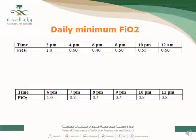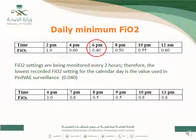Here is an example of daily minimum FiO2 detection. In the first example with every two-hour readings, you take the lowest reading which is 0.4, since it is maintained for one hour. In the second example with hourly readings, you need two consecutive lowest readings. The lowest number is 0.5, maintained for two consecutive readings, so 0.5 is the daily minimum FiO2.